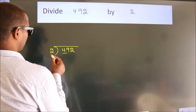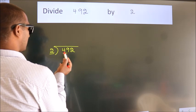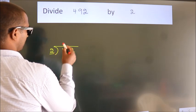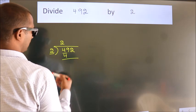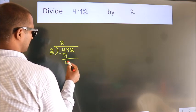here we have 4, here 2. When do we get 4? In the 2 table, 2 2s are 4. Now we subtract. We get 0.